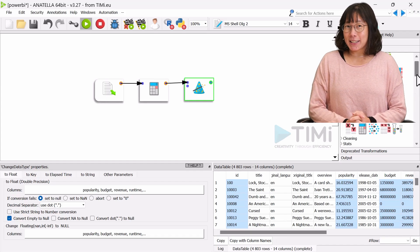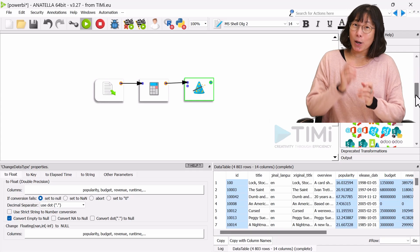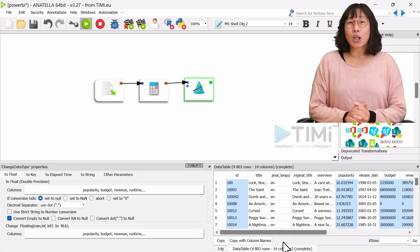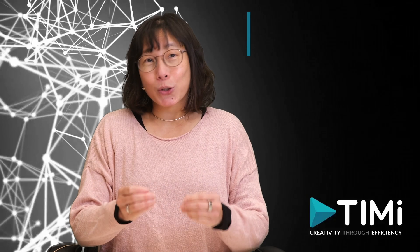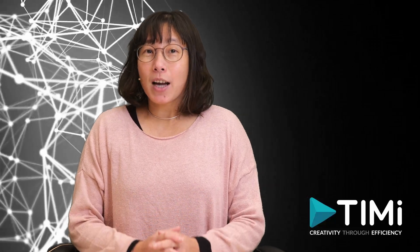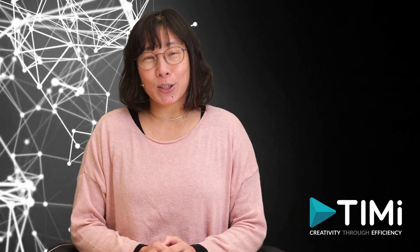With this transformation in place, we now have a refined dataset ready to upload to Power BI. By now, you should be familiar with how to connect to Azure services using Anatella. To connect to Azure, we need the Azure application ID and the Anatella unlock key. If you're unsure how to obtain this, please refer to these two videos.